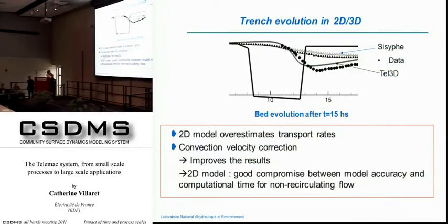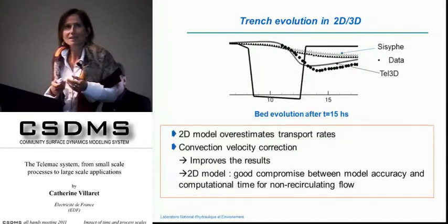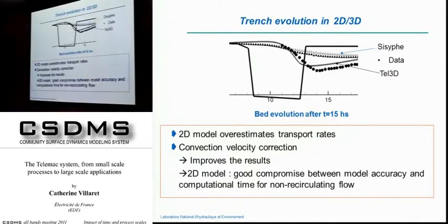Comparing bed evolution: the 2D model is much faster than 3D. However, in this case with strong recirculation in the back of the trench, the 2D model fails — it goes too fast — while the 3D model gives good agreement. You can also see the effect of the convection velocity correction in the 2D result: it's slightly better but not quite good enough.